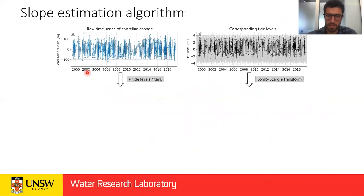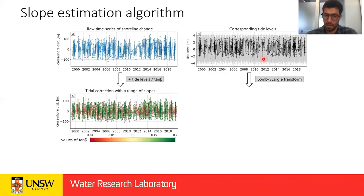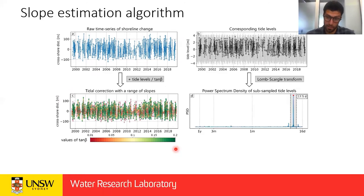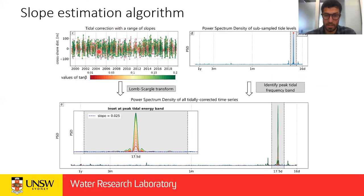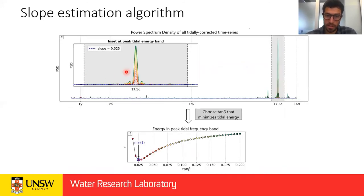Here's how the algorithm works with real data — this is Cable Beach from the beginning of the talk. We have the raw time series of shoreline change, use a global tide model to get corresponding water levels, apply tidal correction with a range of slopes, and identify the frequency at which the tidal signal is strongest. We compute the power spectral density for this ensemble of tidal-corrected time series, look at the energy inside that frequency band, and find the slope that minimizes the energy. In this case it's 0.025, which completely suppresses that peak — this is our estimate of the beach slope.